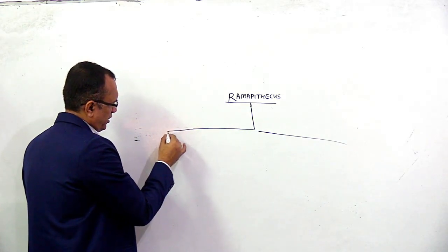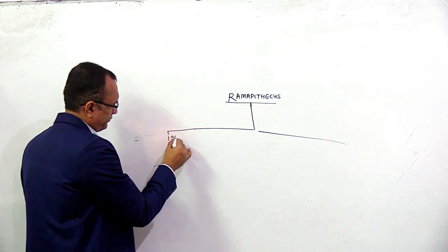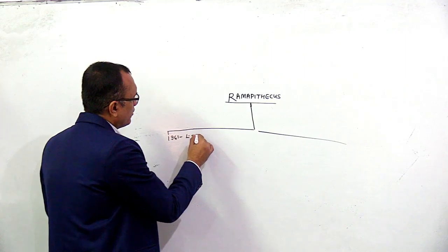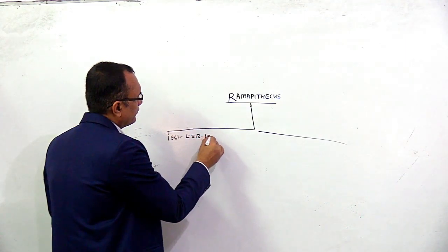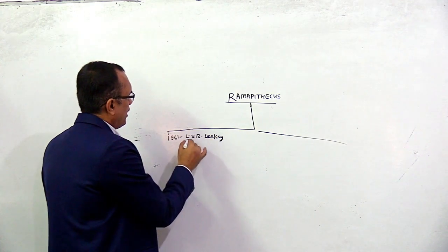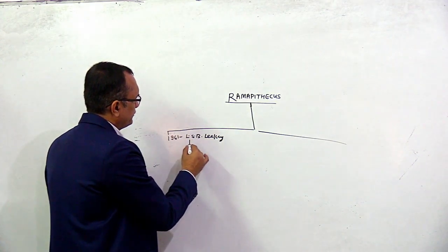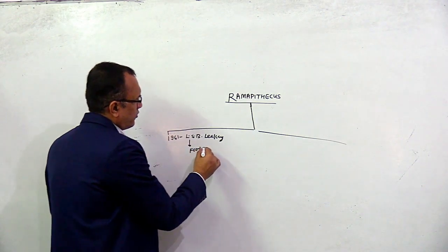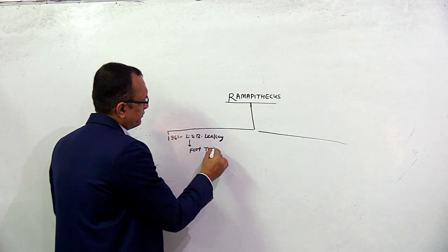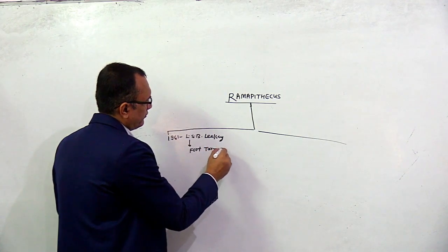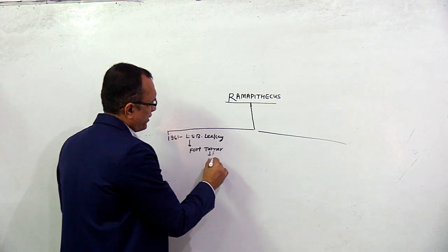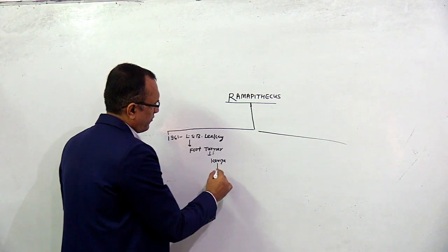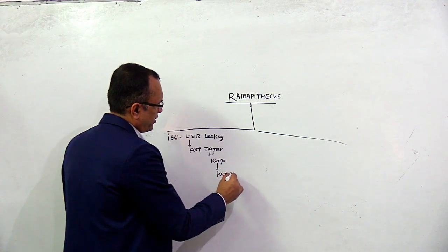Then, in 1961, L.S.B. Leakey discovered fossils of Ramapithecus from Fort Ternan of Kenya and named them Kenyapithecus.